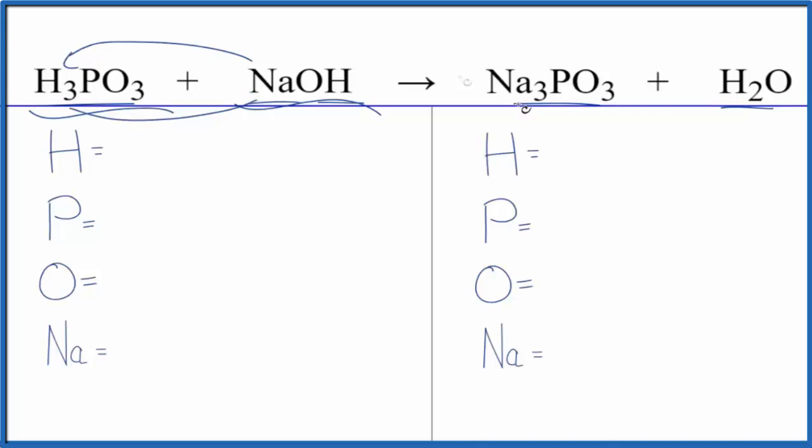Let's balance the equation. First, we'll count the atoms up. We have three hydrogens plus, don't forget this one over here, so we have four hydrogens, one phosphorus, three oxygens, and again, don't forget this one, so we have a total of four oxygen atoms and then one sodium.